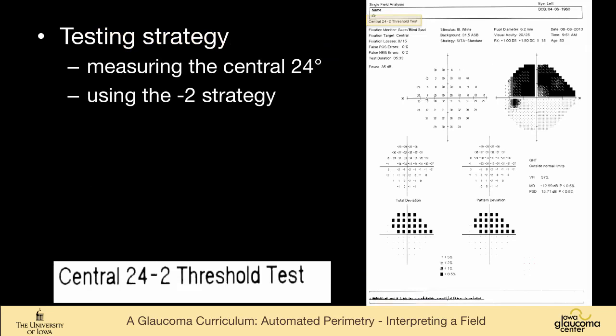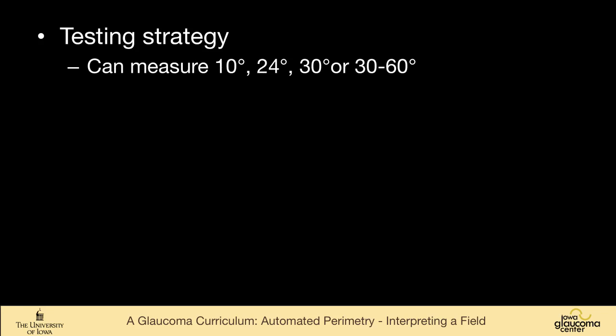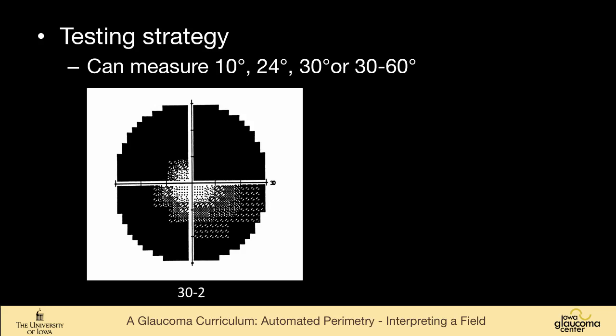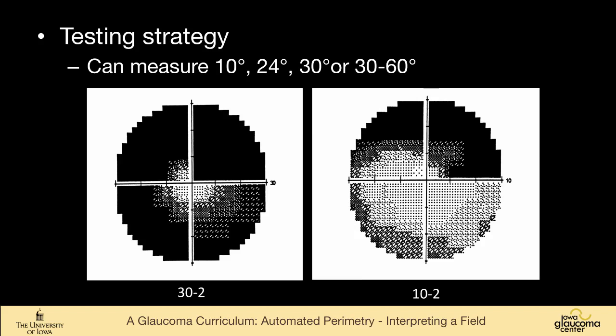So let's talk about ways to vary the test performed. So we're doing a 24-2 threshold test, measuring the central 24 degrees using the dash-2 strategy. You can also measure other widths of the field. The 10-degree field is a very useful alternative. If you have somebody like this where there's very little field and it's all centered around the very central part of the field, you can just measure the central 10 degrees. It gives you a lot more to follow.